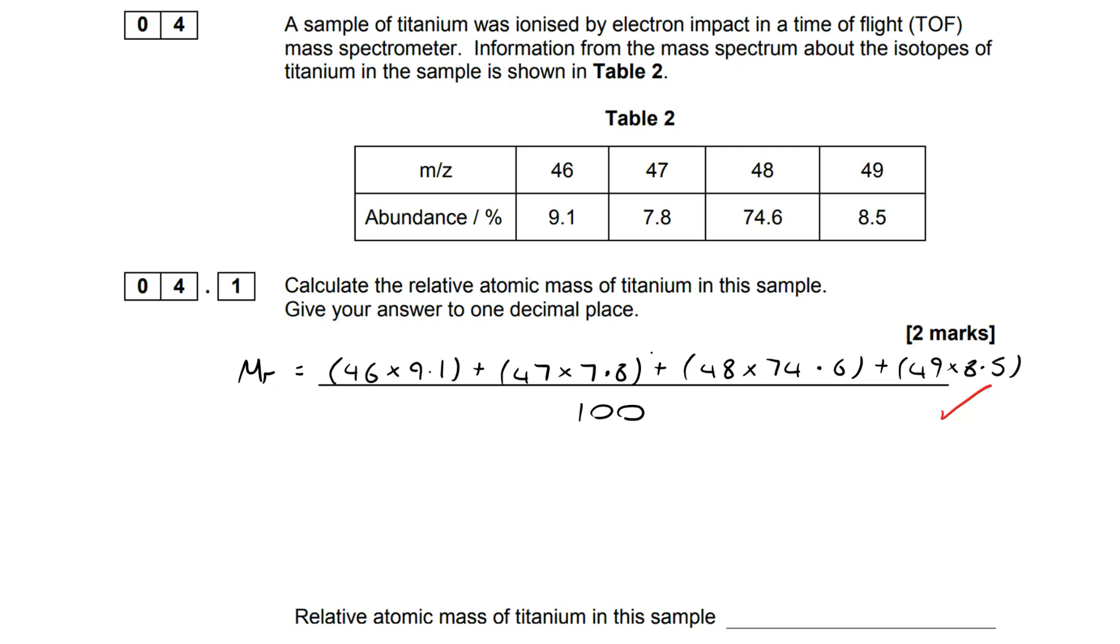The abundance is a percentage, so we know we're going to be dividing by 100. Do bear in mind that on some questions you're not given a percentage abundance and you've got to work out what you're going to divide by.